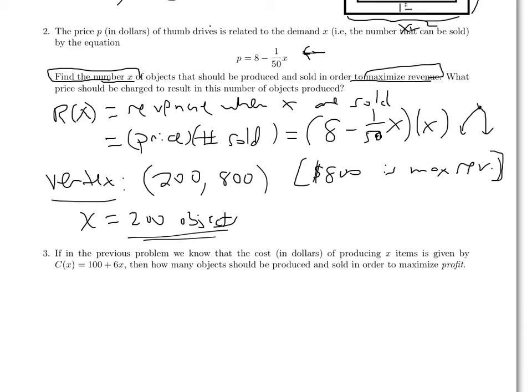It does ask what price should be charged to result in this number of objects. And so for that, I go back to this equation that relates price and the number I expect to sell and put two hundred in there. And so we should be selling two hundred objects at four dollars each. If I do that, then I will maximize my revenue.